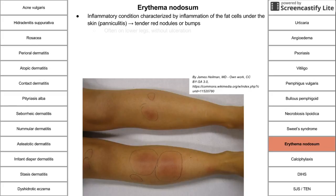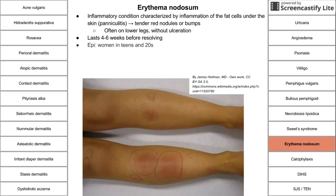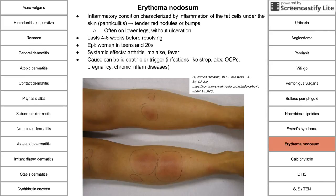Erythema nodosum is an inflammatory condition characterized by paniculitis — inflammation of fat cells under the skin — resulting in tender red nodules or bumps, often appearing without ulceration. It lasts four to six weeks before resolving, usually in women and teens in their 20s. Systemic effects include arthritis, fever, and malaise. The cause can be idiopathic or triggered by strep infections, antibiotic use, oral contraceptives, pregnancy, or chronic inflammatory diseases. Treatment is to address the underlying trigger and use NSAIDs for anti-inflammatory effects.